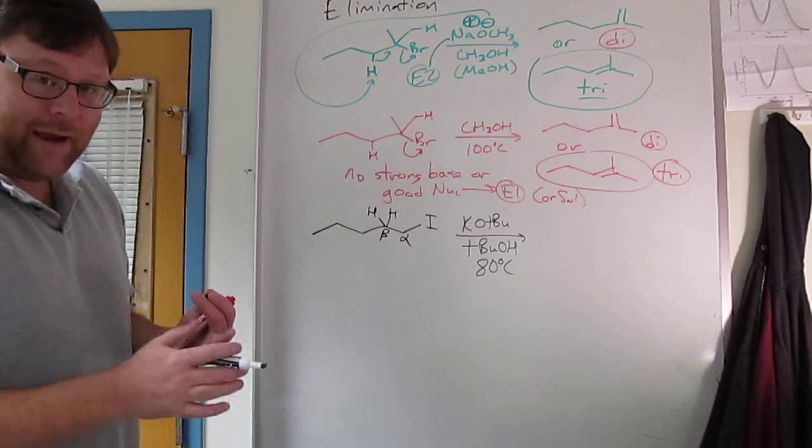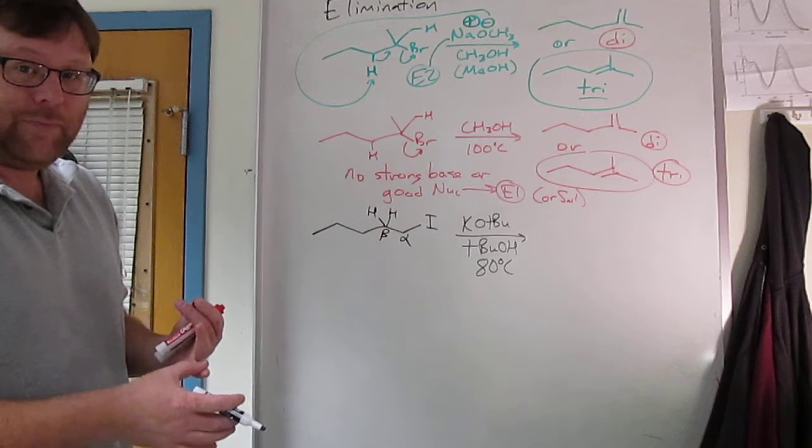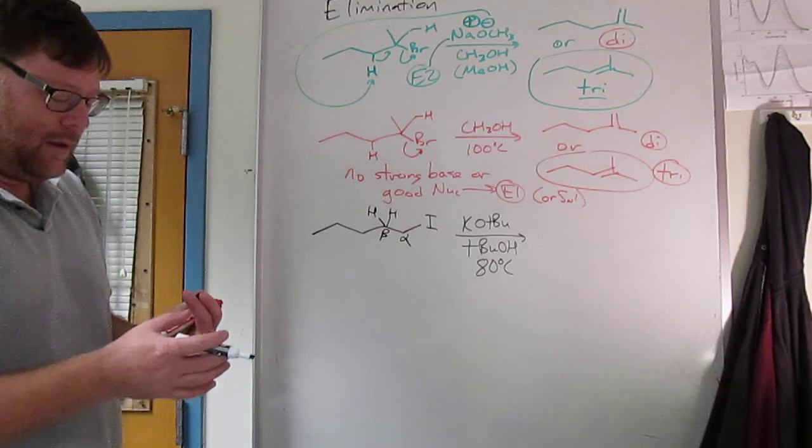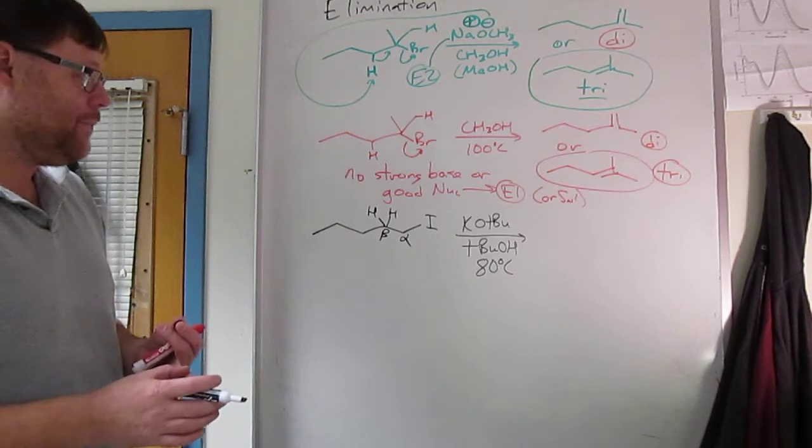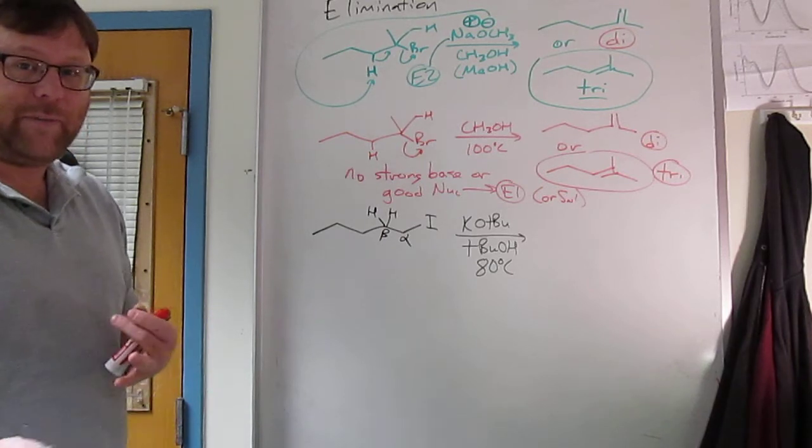If you have a strong base, you can do E2. You'll have E2 over E1. If you have a good nucleophile, you'll do SN2 over SN1. And very often good nucleophiles are strong bases and vice versa.